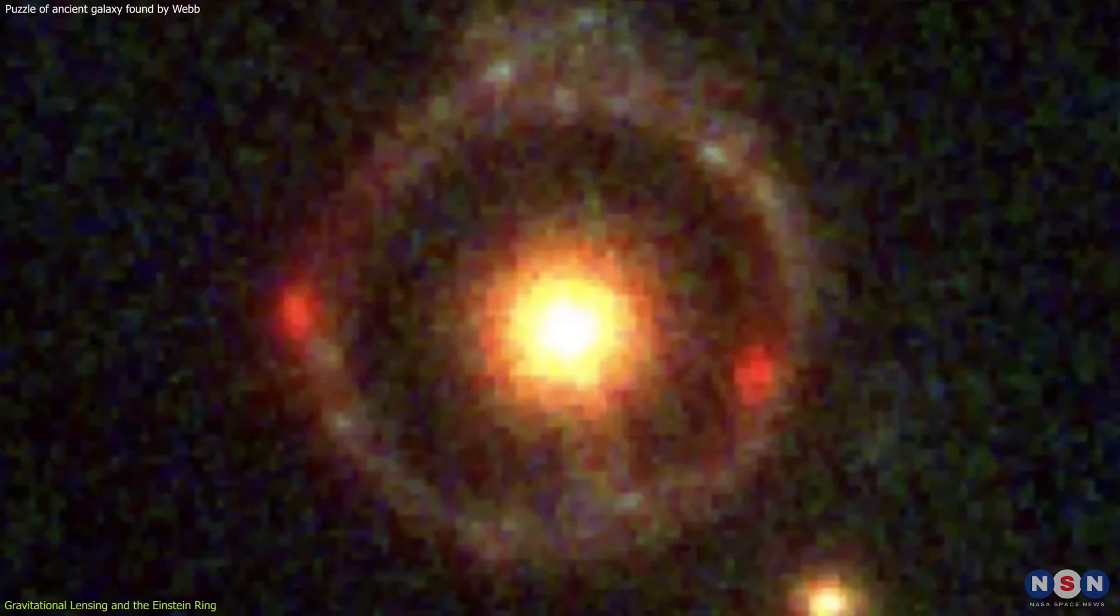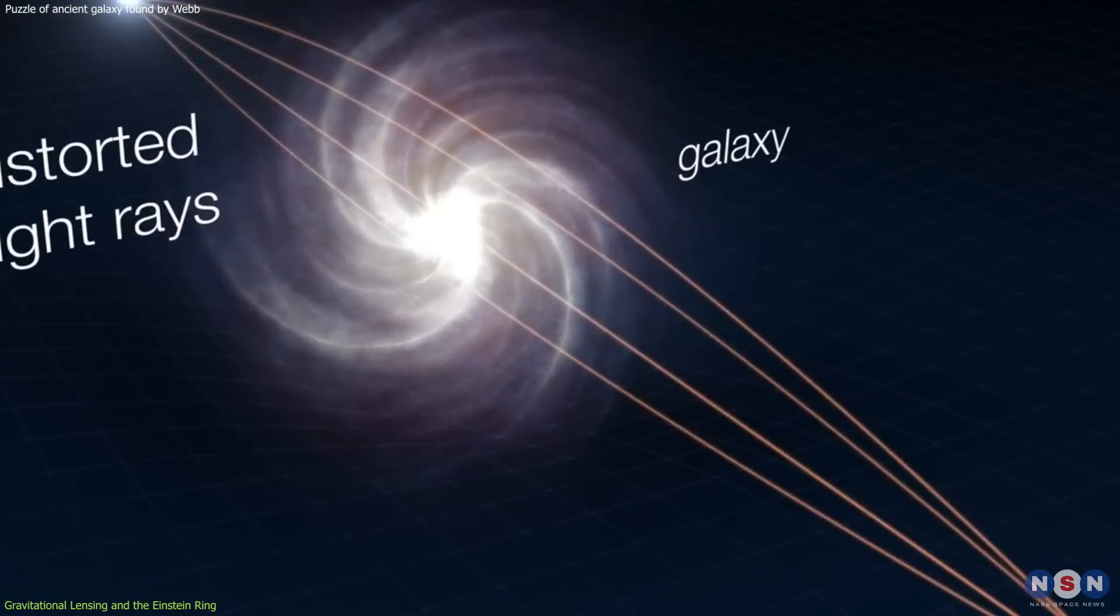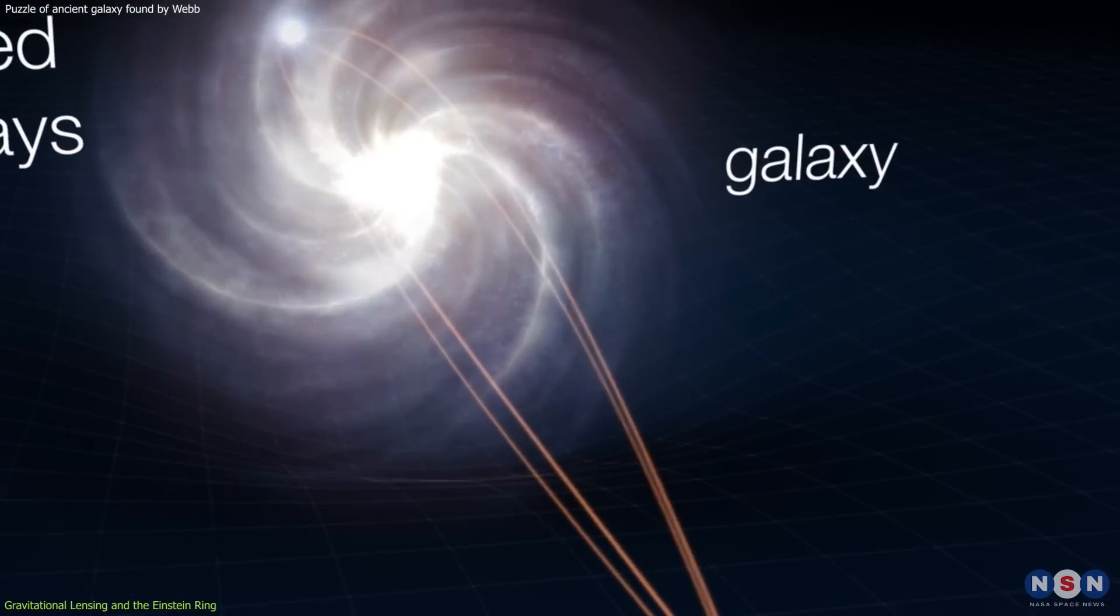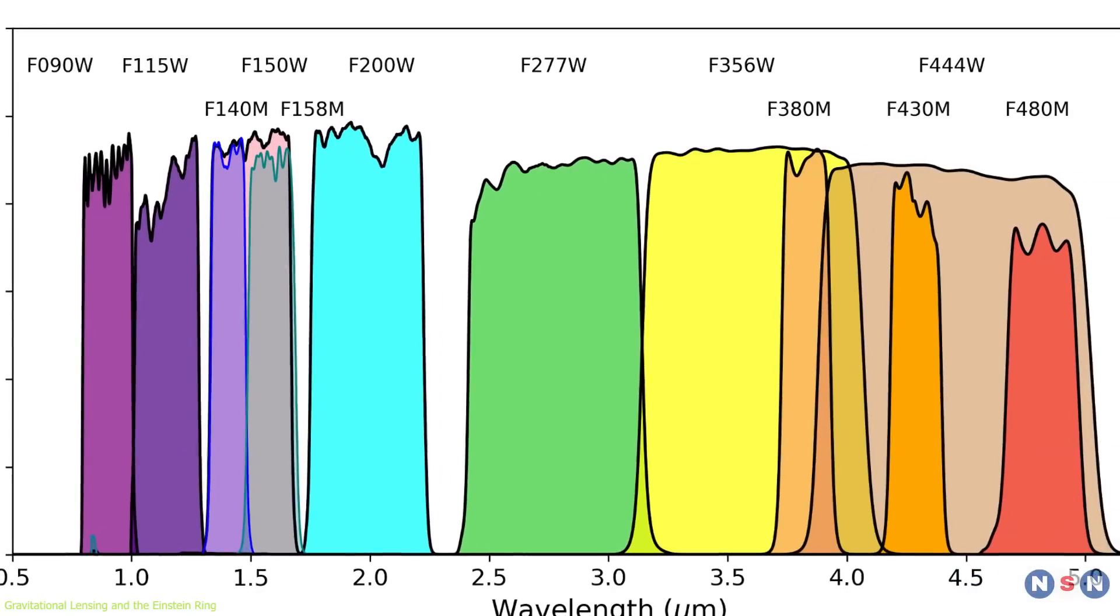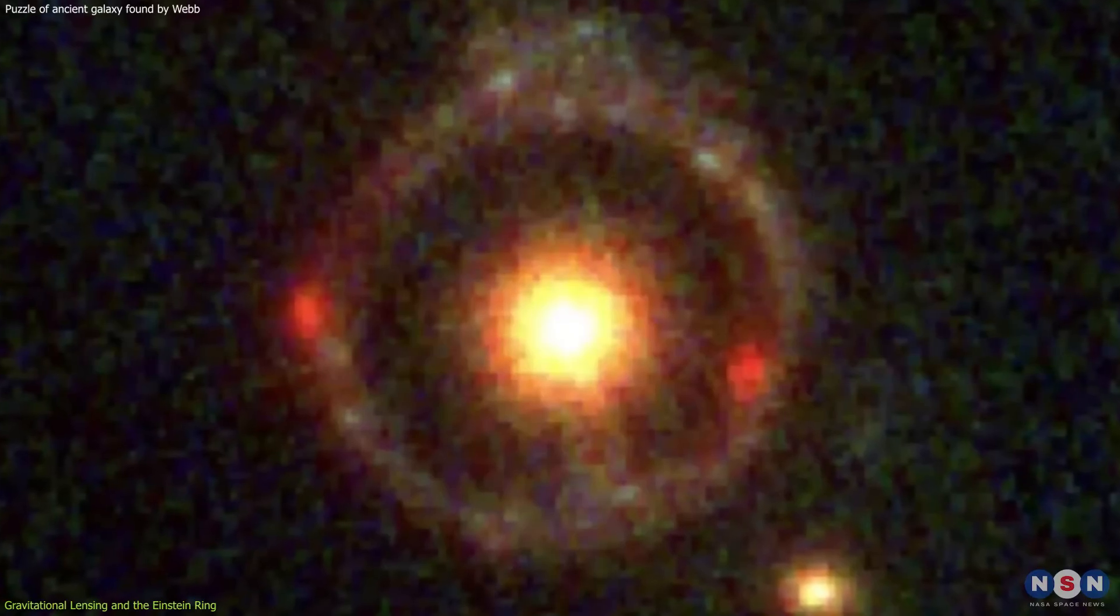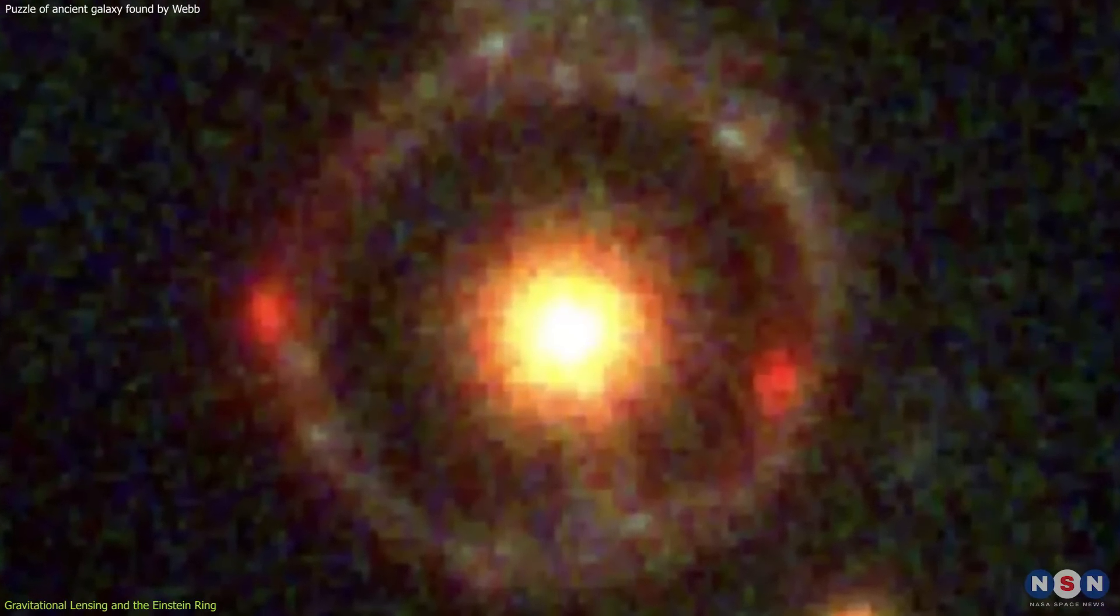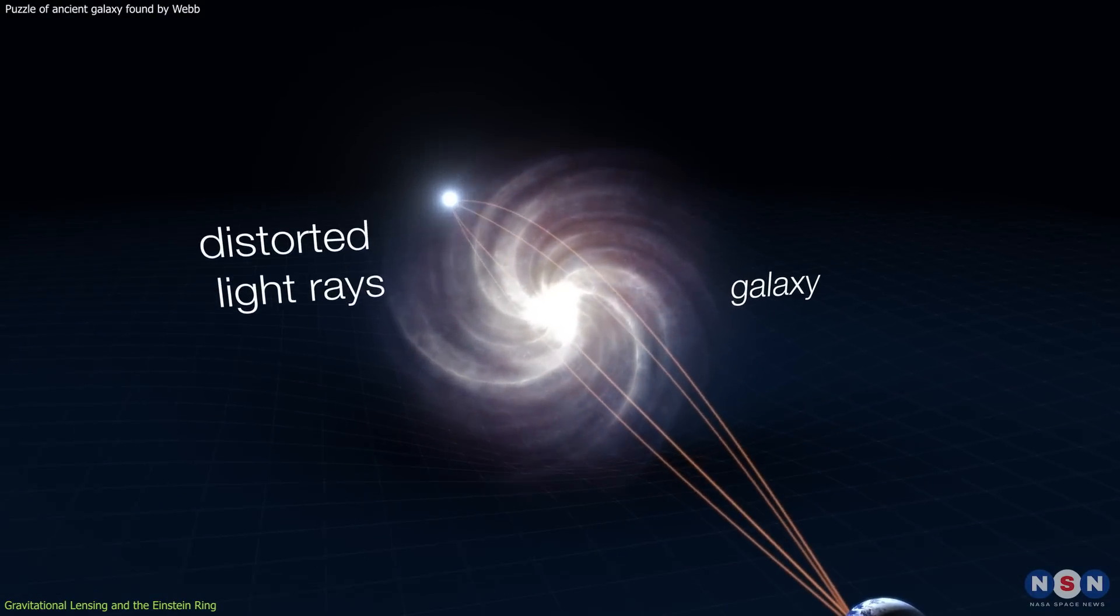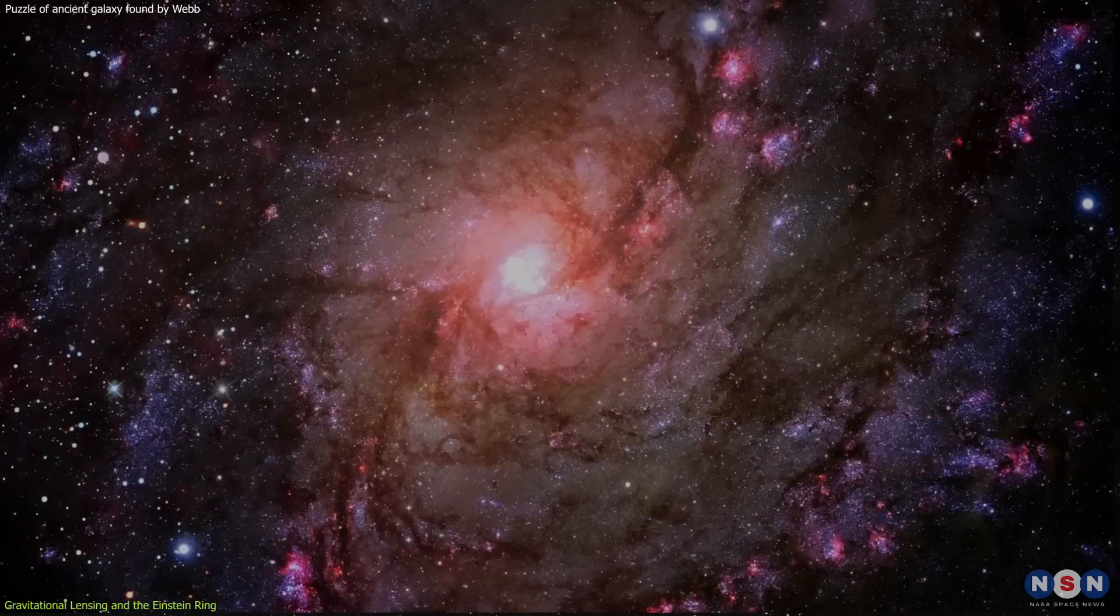The ring, known as JWST-ER1R, provides a unique and powerful tool for astronomers to study both the lensing galaxy and the distant galaxy whose light it magnifies. The NIRCAM observations, conducted through multiple spectral filters, allowed astronomers to determine that the center of this ring measures about 1.54 arcseconds across. The light bending to form this ring comes from a background galaxy at a photometric redshift of 2.98, making this newly discovered galaxy one of the most significant gravitational lenses ever discovered due to its age and the clarity of the lensing effect.